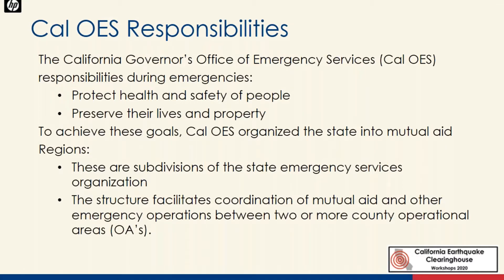Cal OES's responsibilities are to protect the health and safety of people and preserve lives and property. To achieve this, we focus on mutual aid regions — the subdivisions of the state. When local resources are overwhelmed, requests move to the next level: local government goes to the regional level, then to the state level, and then to the federal level. This maximizes the use of resources closest to the incident.